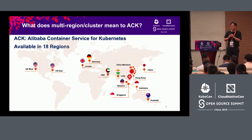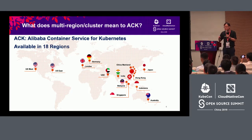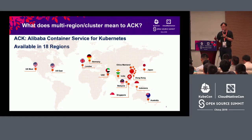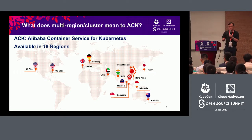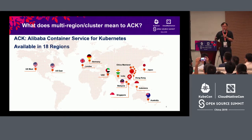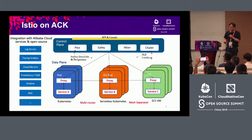What does multi-regional cluster mean to ACK? ACK refers to Alibaba Container Service for Kubernetes, and we'll focus on ACK for the rest of this presentation. Currently, on Alibaba Cloud ACK, we have 18 regions with services available. If clients have overseas business or business in China, they can use cross-regional management services based on ACK.